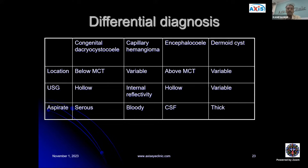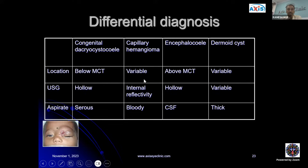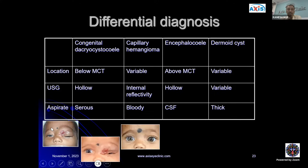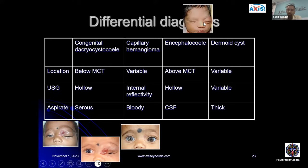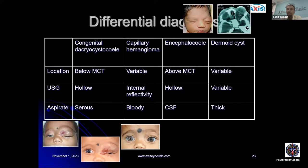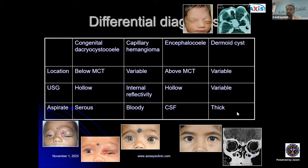The differential diagnosis of congenital dacryocystocele: it is usually below the medial canthal tendon, hollow on ultrasound, with serous aspirate. Capillary hemangioma has variable location, high internal reflectivity on ultrasound, and bloody aspirate. An encephalocele is usually above the medial canthal tendon, hollow on ultrasound, with CSF aspirate. A dermoid cyst has variable location and a thick, dirty serous aspirate on ultrasound.